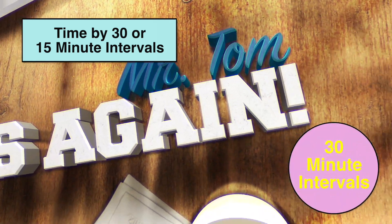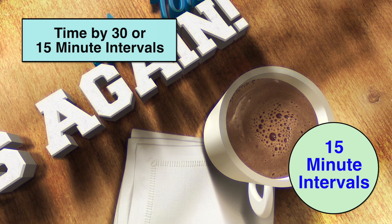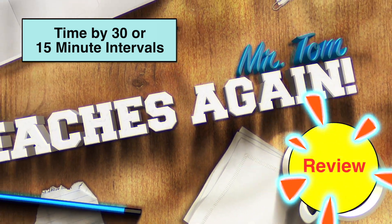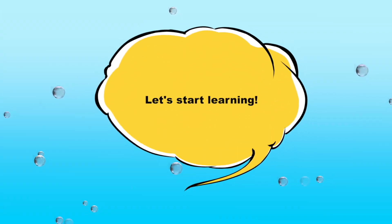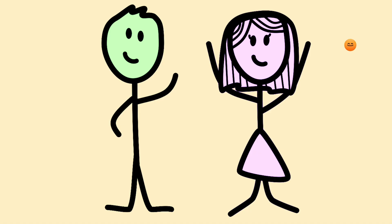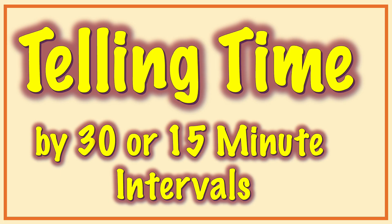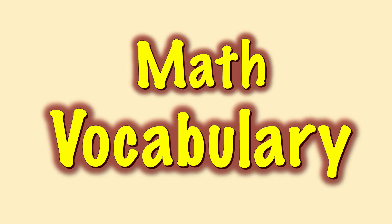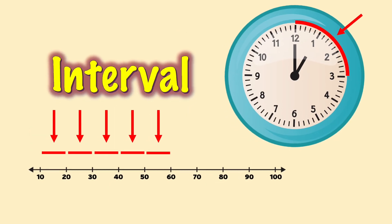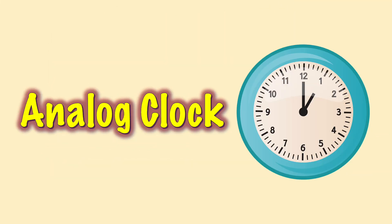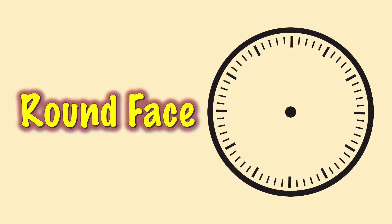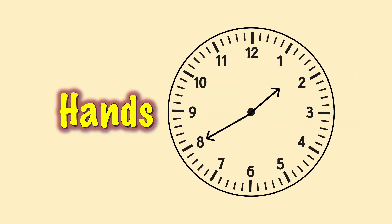Hello everyone! Today we'll talk about telling time by 30 minute and 15 minute intervals on an analog clock. Some math vocabulary for today: an interval is an even space between things. An analog clock is a clock that usually has a round face, numbers, and two hands that move.